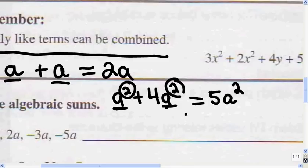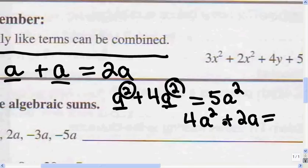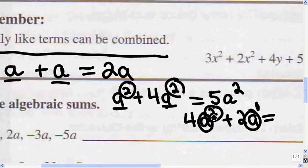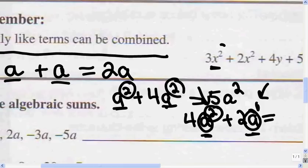If I have 4a squared plus 2a, I can't add those because the variables are the same, but the exponents are different. When there's no exponent, it's understood to be 1. So this one has an exponent of 2 and this one has an exponent of 1, so those aren't like terms. Even though the variables are the same, the exponents are different, so I can't add those. Remember: like terms have the same variable and the same exponent.